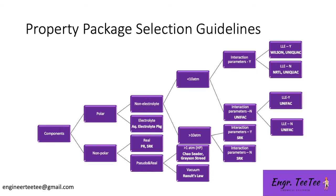This chart here gives some guideline on how to select a property package for your simulation. You can see it depends on different parameters — such as whether the components are polar or non-polar, electrolytes or non-electrolytes, real or pseudo-components. It also considers whether you're operating at less than or greater than 10 atmospheres, which is quite important and can affect which property package works best.